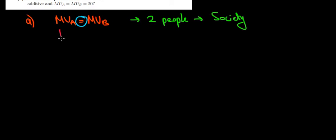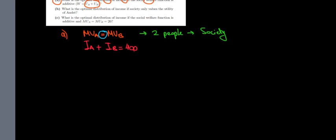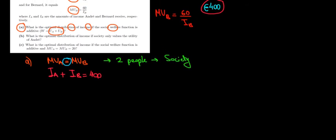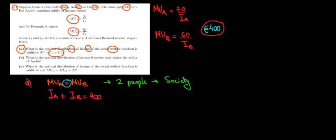The income of Andre plus the income of Bernard is equal to 400 euros. With this in mind, it's just a matter of math — we substitute the marginal utility functions and solve. The marginal utility of Andre is equal to 20 divided by his income.